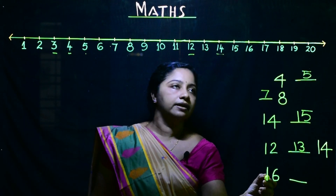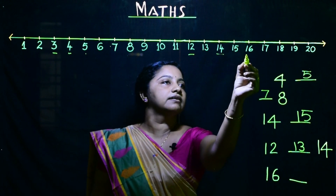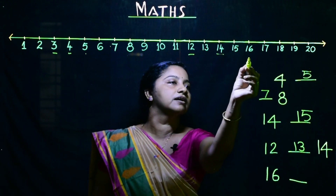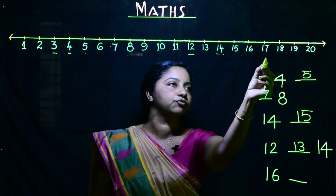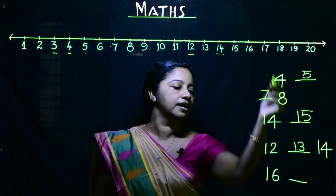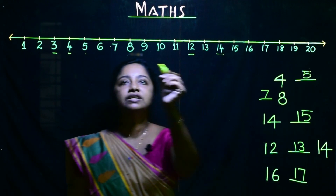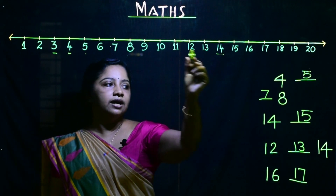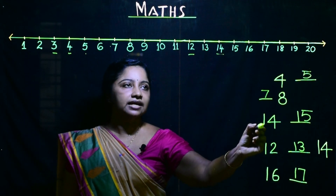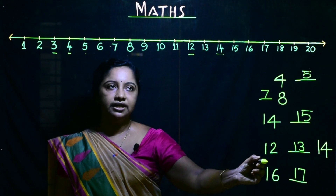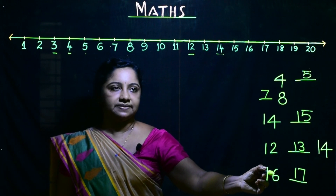Now look at number 16. What is the number after 16? 17. So with the help of this number line, we can find the before, after and between numbers.